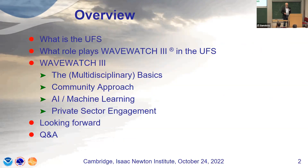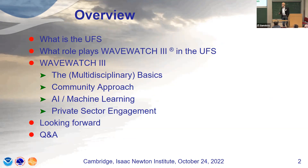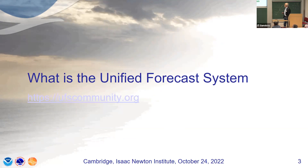We're going to talk about our Unified Forecast System and particularly the way we do community modeling with that, then move to the wave model, talk about the multidisciplinary background, the community approach, some AI and machine learning, how we interact with the private sector, and then look forward. Our Unified Forecast System is something we started developing about five or six years ago. There's a ufs-community.org website if you're more interested. And yes, this is a .org, not a .gov — we really intended to do this as an organization outside of NOAA with the entire community.